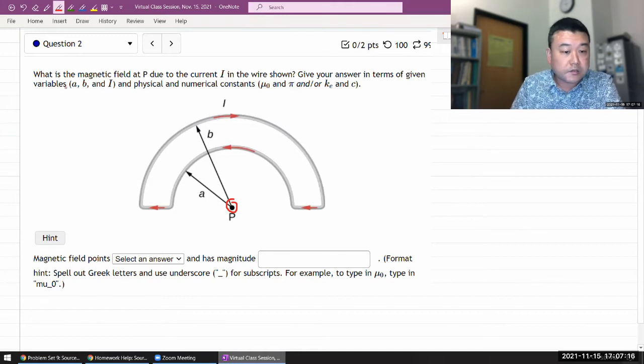What is the magnetic field at point P due to the current I flowing in the wire as shown? Give your answer in terms of given variables. A is the inner radius, B is the outer radius and numerical constant.